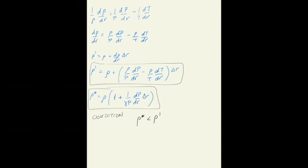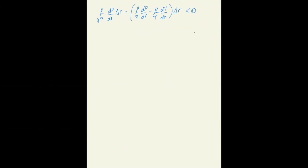So we have the condition: rho star minus rho prime equals rho over gamma times p over dp/dr delta r minus rho over p times dp/dr minus rho over t times dt/dr delta r. The condition for convection is that this must be less than zero. This is the condition for convection. From now on, it's just cosmetics.